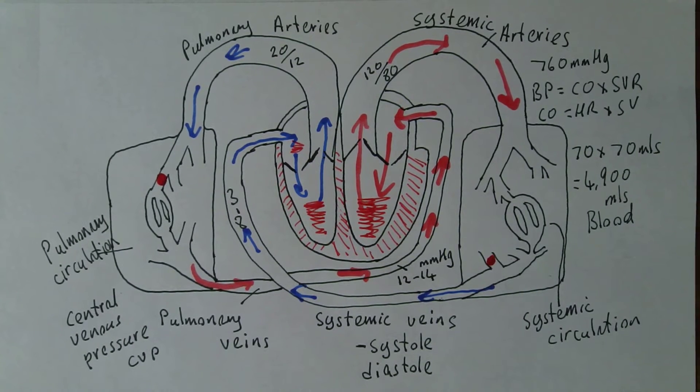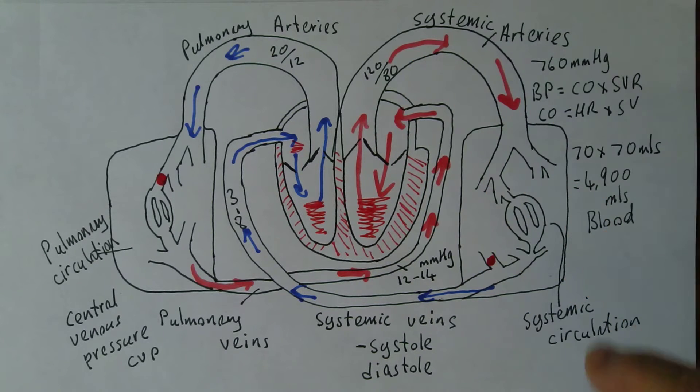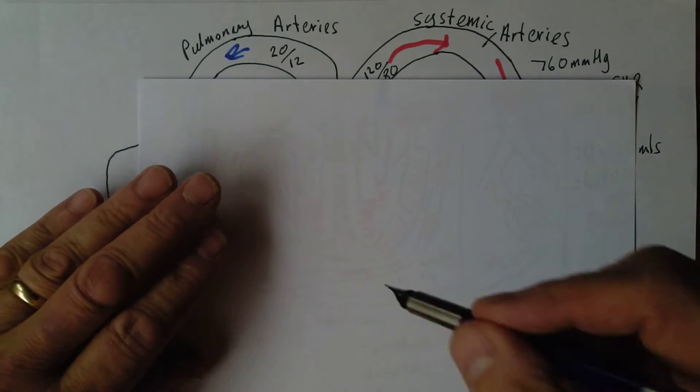I want to carry on our review of cardiovascular diseases by considering another problem of the systemic arteries. We've considered hypertension as a condition affecting the systemic arteries. Another common condition affecting the systemic arteries is atherosclerosis.